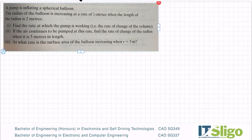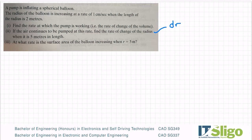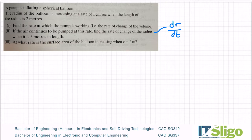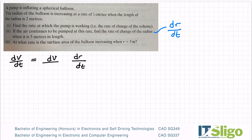Part two: if the air continues to be pumped at this rate, find the rate of change of the radius — so the rate of change of radius is dr/dt with respect to time — when it comes to five meters in length. If the air continues to be pumped at this rate, meaning the rate of change of volume stays the same, what is the rate of change of the radius?